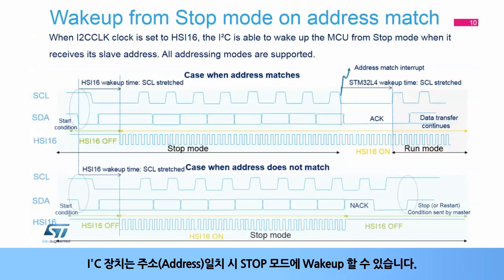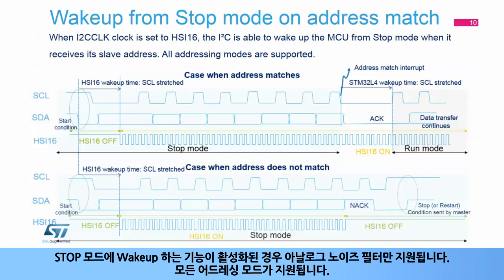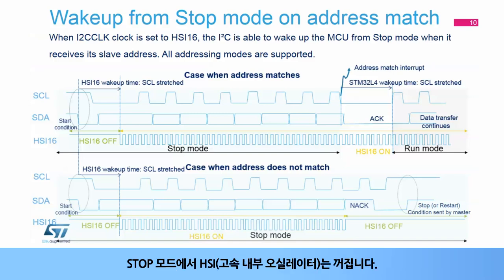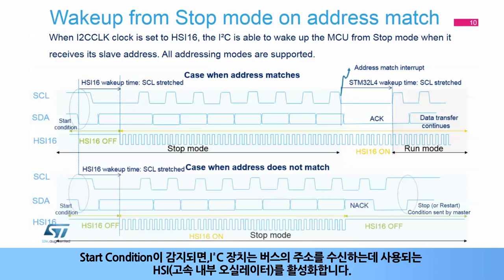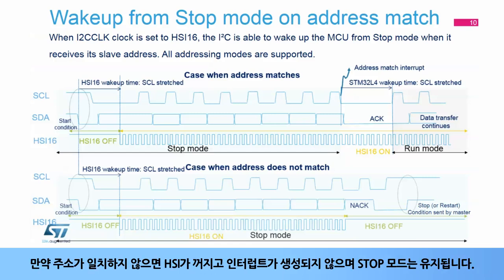The I2C peripheral supports wake-up from stop mode on address matches. To do this, the I2C peripheral clock must be set to the high-speed internal 16 MHz RC oscillator. Only the analog noise filter is supported when the wake-up from stop feature is enabled. All addressing modes are supported. When the device is in stop mode, the high-speed internal oscillator is switched off. When a start condition is detected, the I2C peripheral enables the high-speed internal oscillator, which is used to receive the address on the bus. After an address is received in stop mode, a wake-up interrupt is generated if the address matches the programmed slave address. If the address does not match, the high-speed internal oscillator is switched off, no interrupt is generated, and the device remains in stop mode.